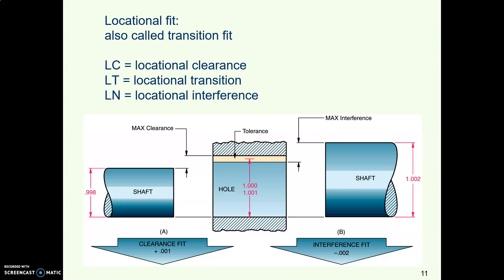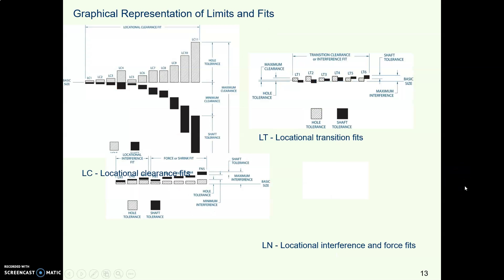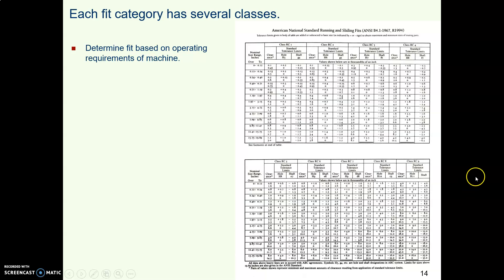Then there's a third category of fit called the locational fit or a transition fit. To tell you the truth, I don't understand these because they are sometimes a clearance and sometimes an interference. I still cannot figure out why would you want that. What ANSI says is you use it if you are doing what they call selective assembly where you're picking a particular part out of a particular bin and picking a mating part.